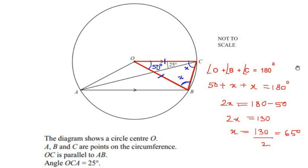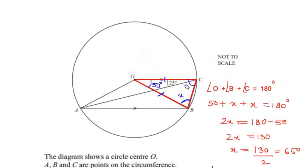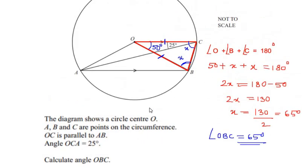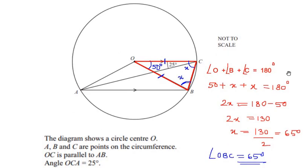So we have found that angle OBC equals 65 degrees. This is how we find the value of angle OBC using the properties of isosceles triangles and parallel lines. I hope you have understood all the steps. If you are liking my videos, please like, share, and subscribe to my channel. Thank you for watching.